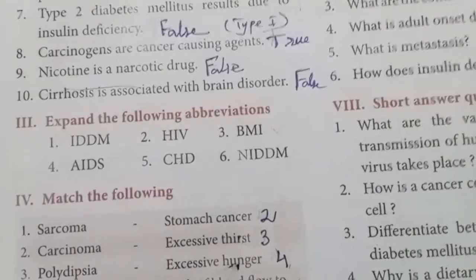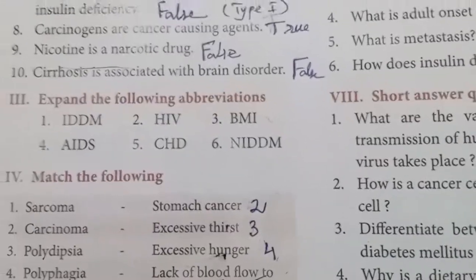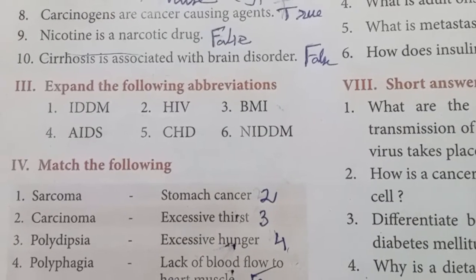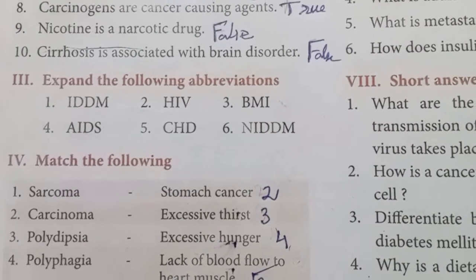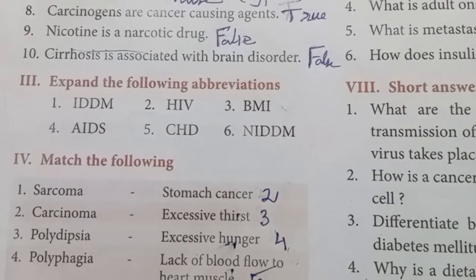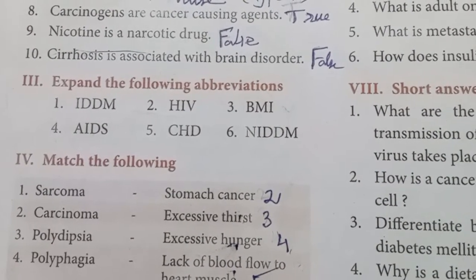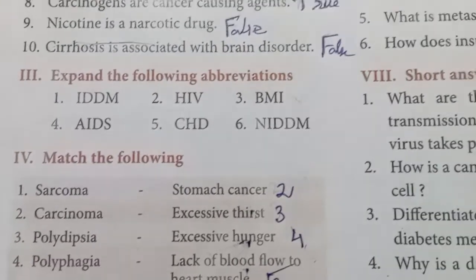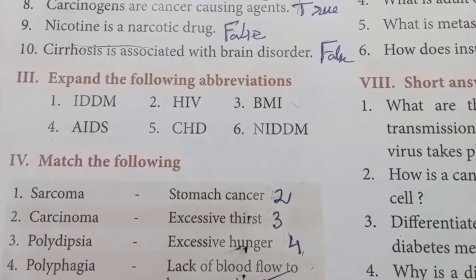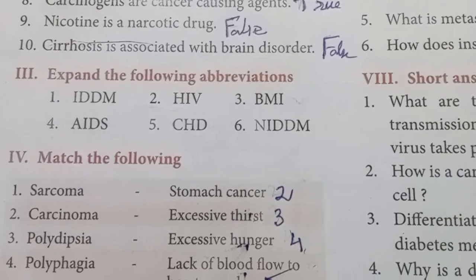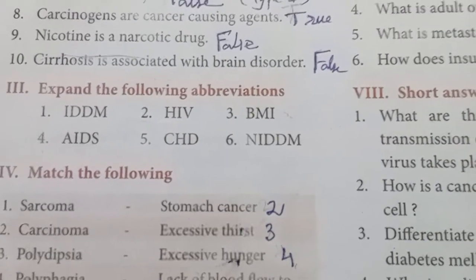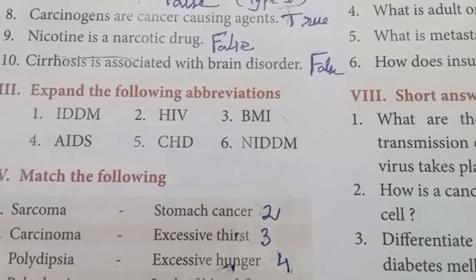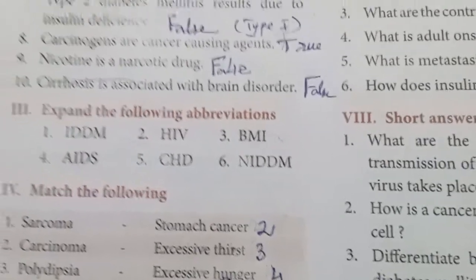Expand the following abbreviations: IDDM — Insulin Dependent Diabetes Mellitus. HIV — Human Immunodeficiency Virus. BMI — Body Mass Index. AIDS — Acquired Immunodeficiency Syndrome. CHD — Coronary Heart Disease. NIDDM — Non-Insulin Dependent Diabetes Mellitus.